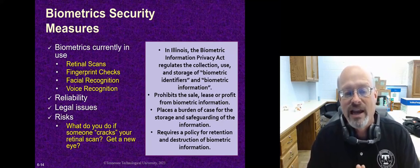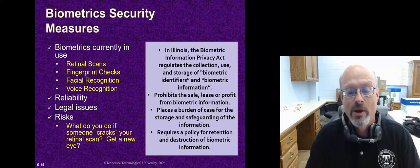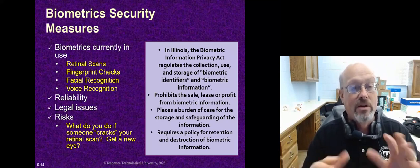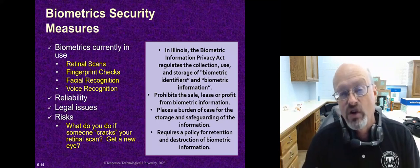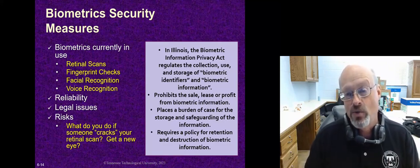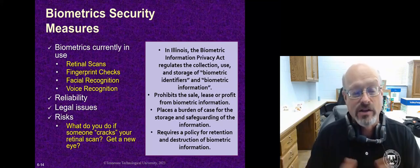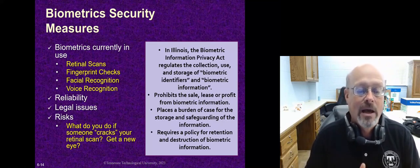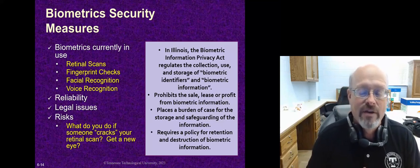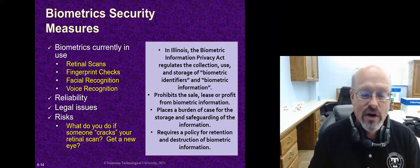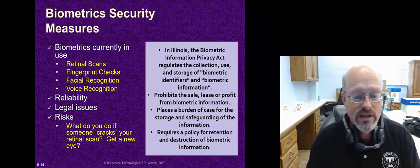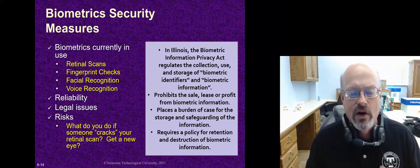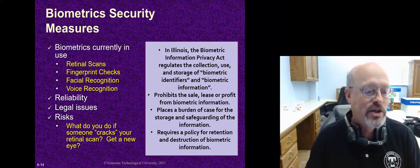In Illinois, the Biometric Information Privacy Act regulates the collection, use, and storage of biometric identifiers and biometric information. It prohibits the sale, lease, or distribution of biometric information. It places a burden of proof for the storage and safeguarding of the information — you have to prove that you're doing this. It requires a policy for retention and destruction of biometric information. This is different from written information, so the law requires special treatment of biometric data.